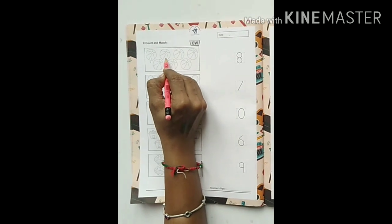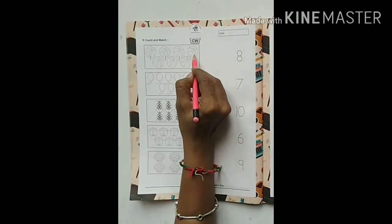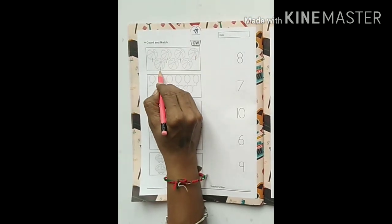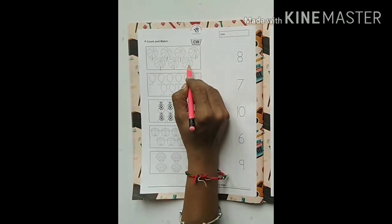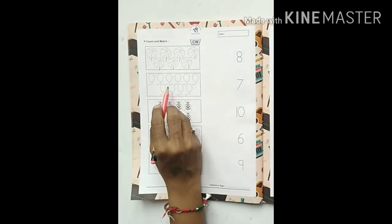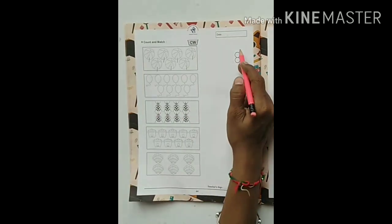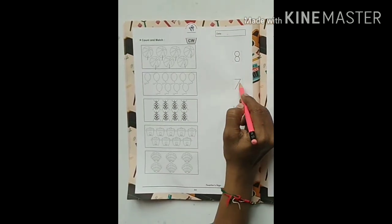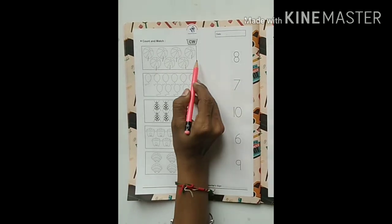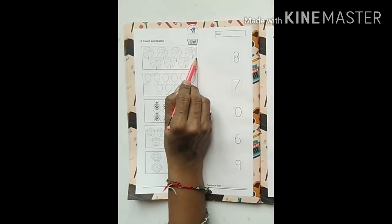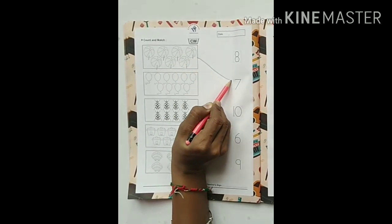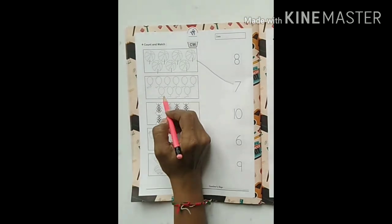1, 2, 3, 4, 5, 6, 7. Seven balls. Now we have to see where is the 7 number? Yes, here is the 7 number. Now we have to match balls with 7 number.